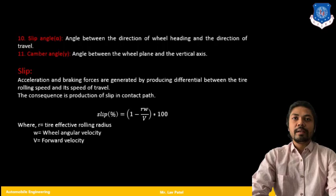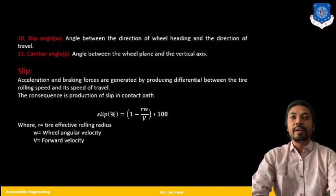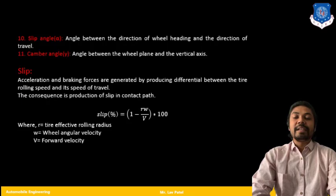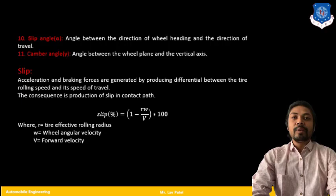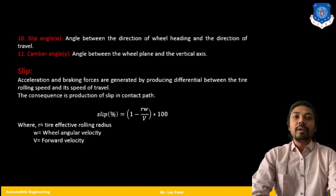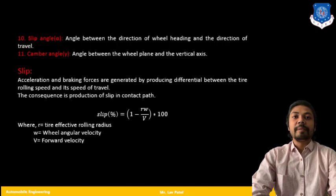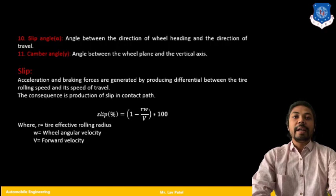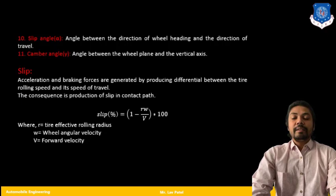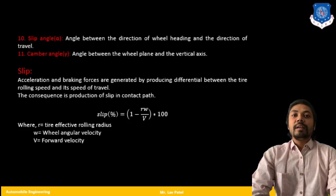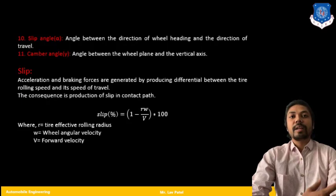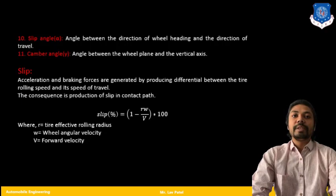Now let us see one most important term that will be used in the future also, like slip. We all know that acceleration and braking forces are generated by producing differential between the tire rolling speed and its actual speed of travel. That particular is called slip. In equation we can write slip is equal to 1 minus R*omega by V into 100. Here R is the effective rolling radius of the tire, omega is the angular velocity, and capital V is the forward velocity. In simple language we can say that if I am going to apply the brake, the tire is about to lock itself, and due to that the distance is covered more compared to without slip. That is called slip.